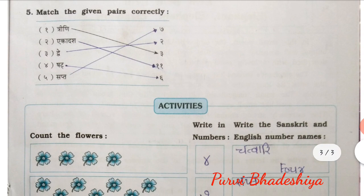Exercise number 5: Match the given pairs correctly. So the first: Trini means 3. Ekadash means 11. Drei means 2. Shatter means 6. Sapt means 7.